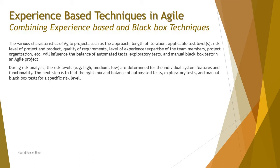The various characteristics of agile projects — such as approach, length of iteration, applicable test levels, risk level of project and product, quality requirements, level of experience, expertise of the team members, and project organization — will influence the balance of automated test, exploratory test, and manual black box testing in an agile project. Everything needs to be well understood: what is applicable best at what point in time and which has a major contribution when delivering something in minimal time.